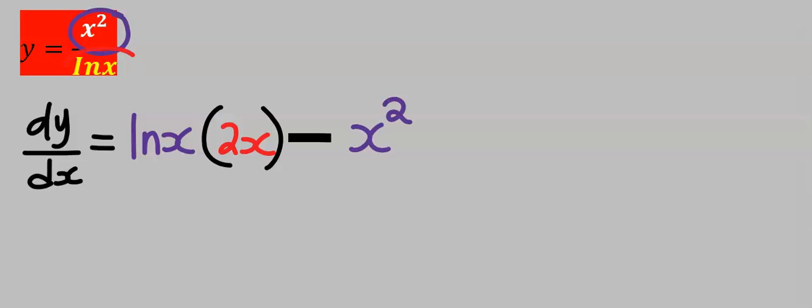Next, you differentiate the natural log of x. From the basic derivative table, if you differentiate the natural log of x, you are going to get 1 over x.